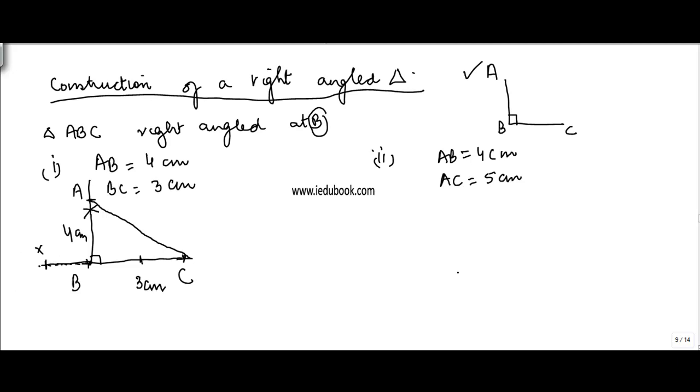Let's see the other one. Here again ABC is there, but this time I know that this is four centimeter and this is five centimeter. But I don't know what is the length of BC.